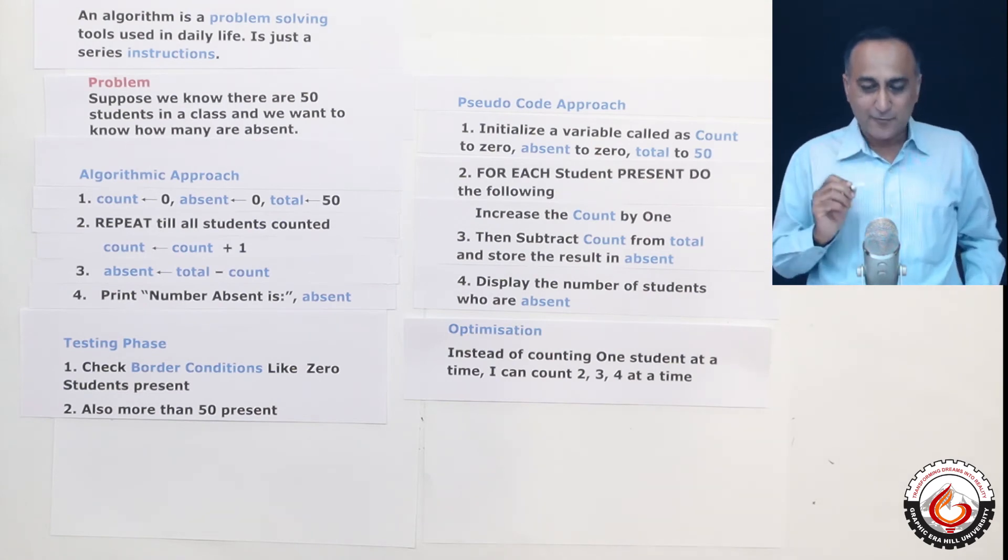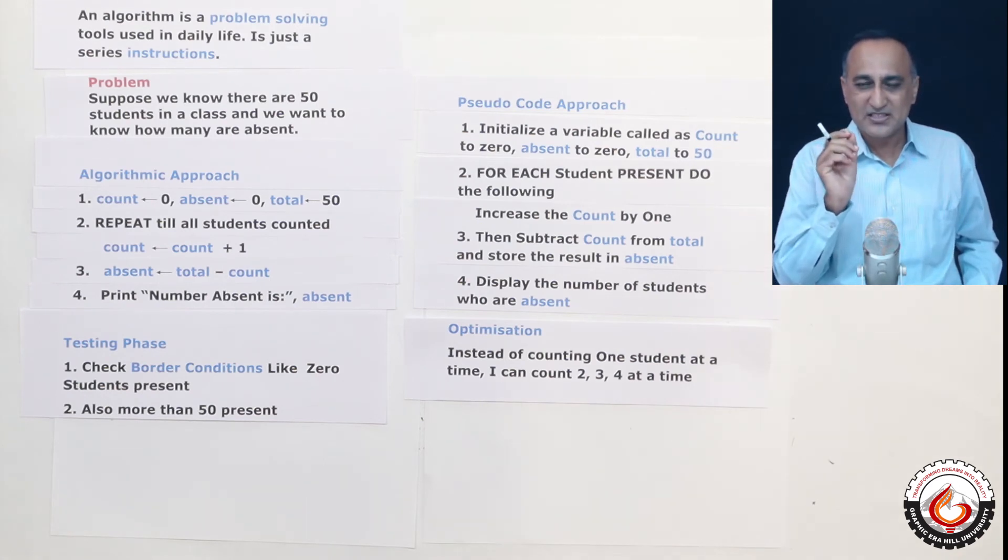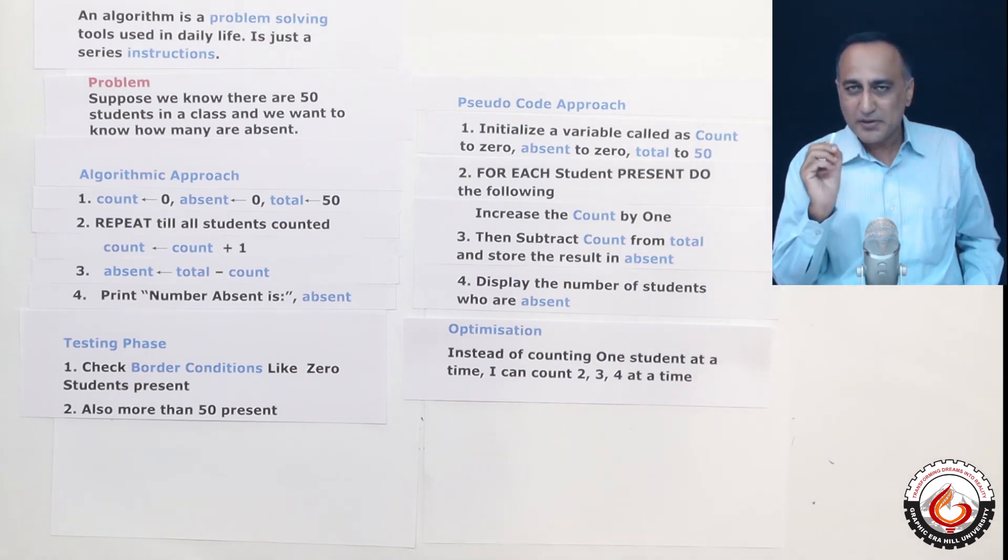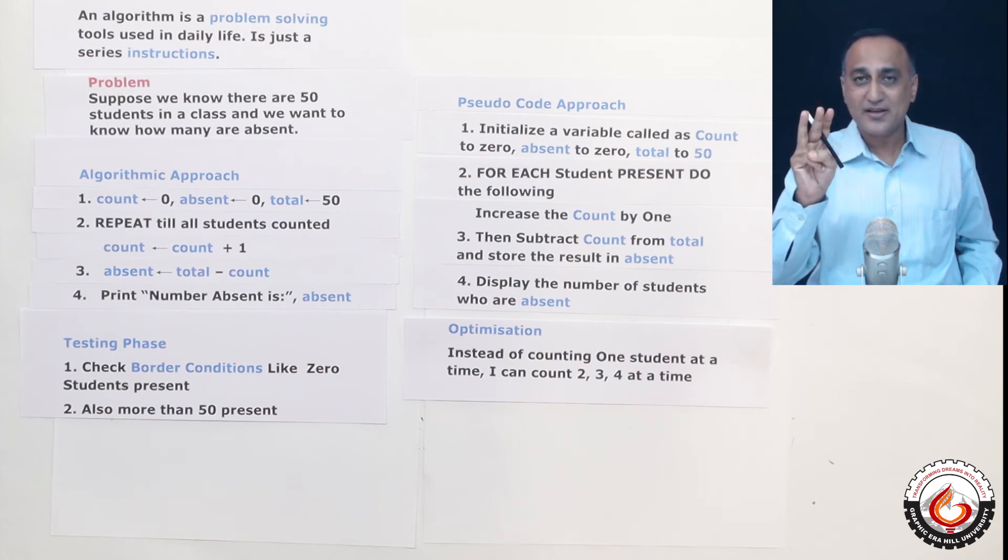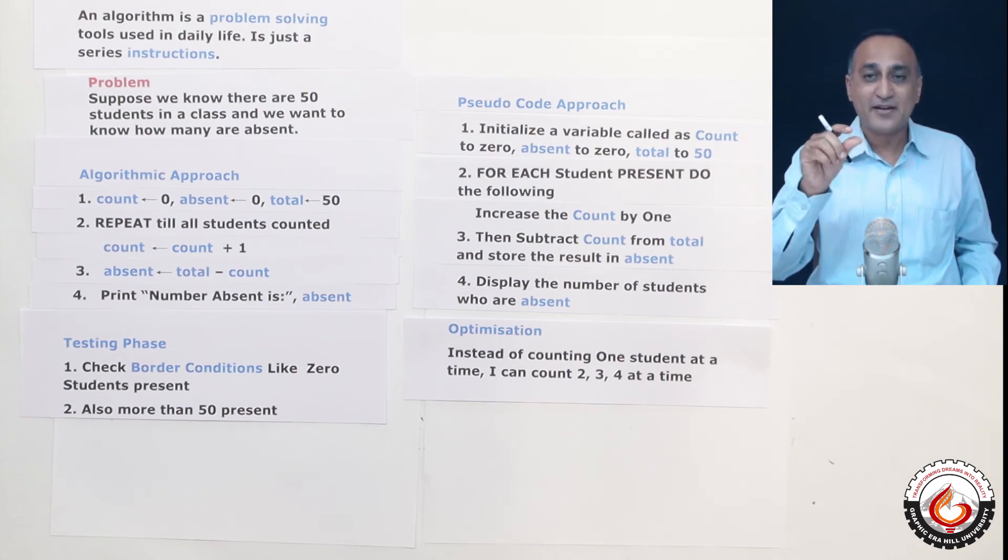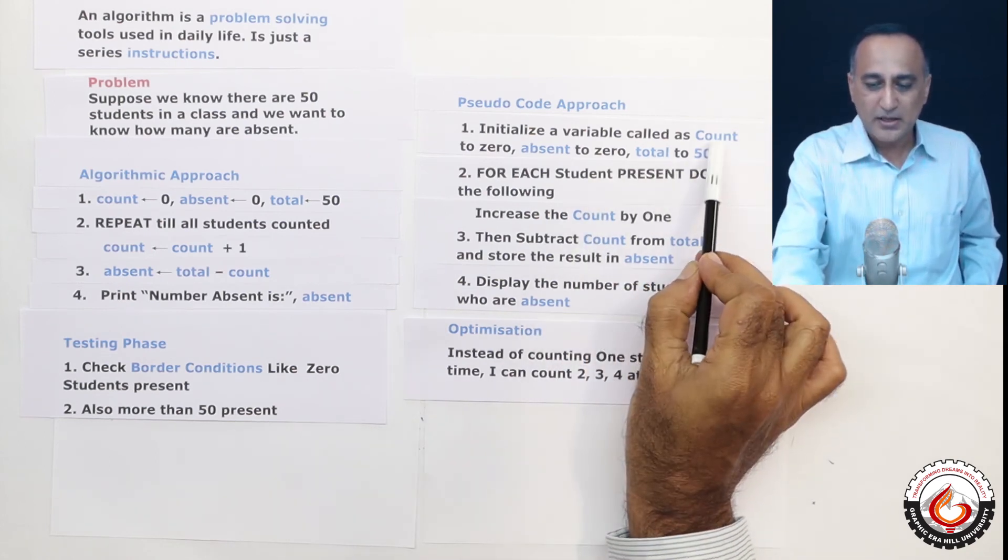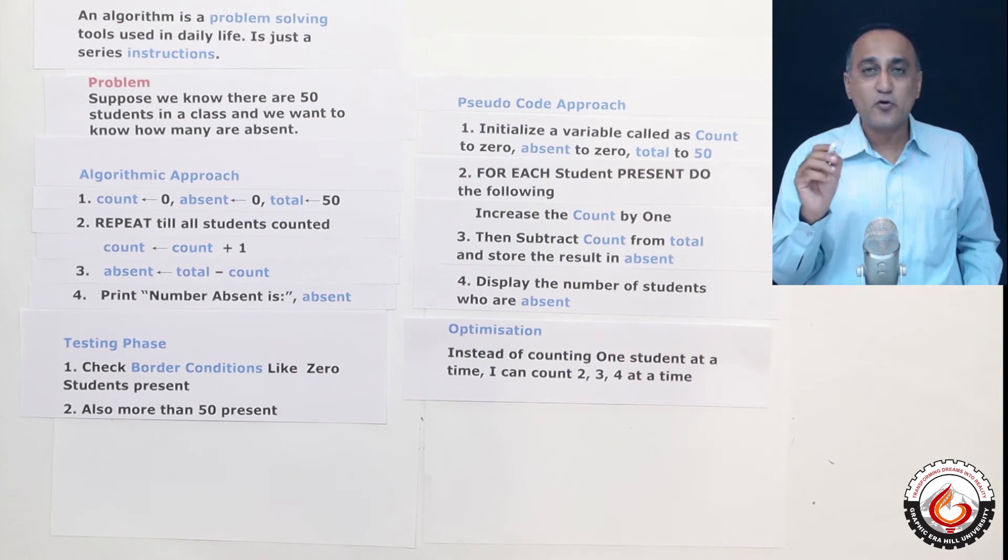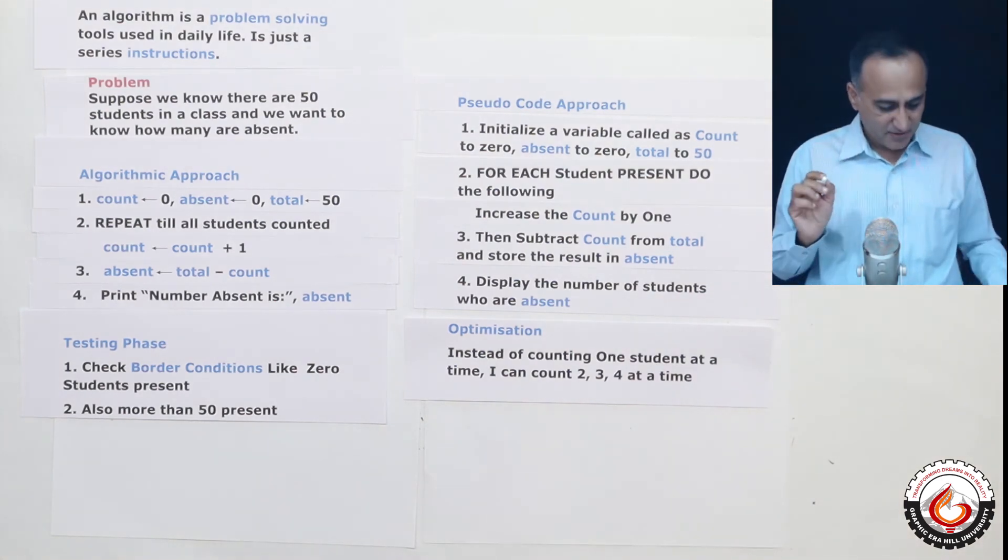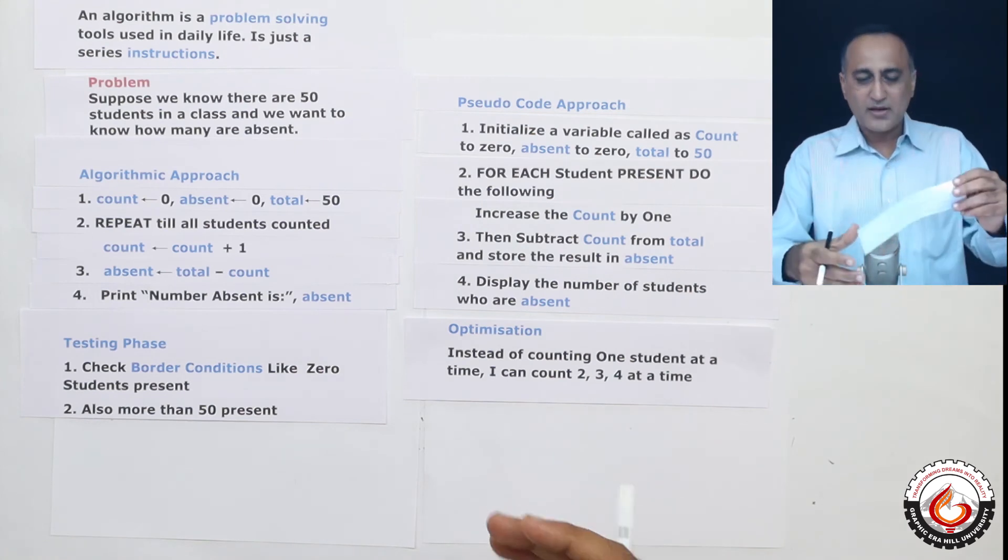Now, you need to be careful when you're counting, say, four at a time. Suppose the number of students present is 43. So what will happen is four times 10 is 40, then three remain at the last. You should be sure that the remaining last three also should be added finally to this count variable. If you don't add it to the count, then you're going to get the total number of absent incorrect. So an error can happen when you're counting more than one student at a time. You may miss to count the last remaining students if your logic or your thought process is not clear.